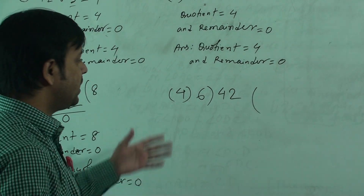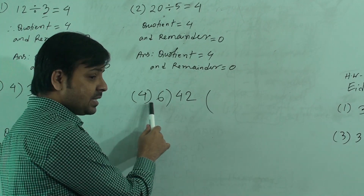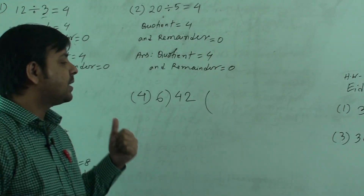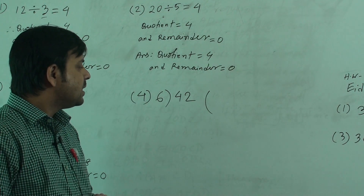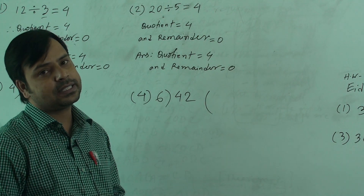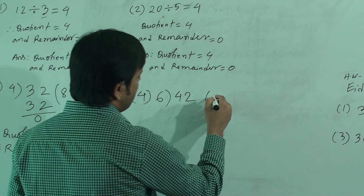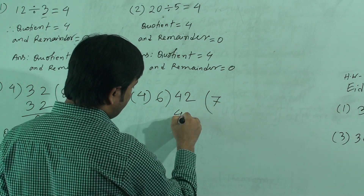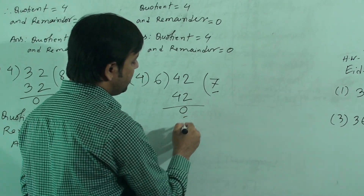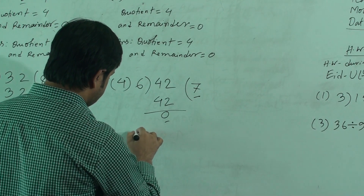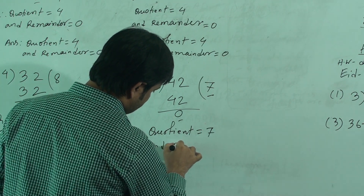Let us see our last question today. Last question is question 4. We need to divide 42 by 6. So, 6 is the divisor. We have to say the times table of 6: 6 0s are 0, 6 1s are 6, 6 2s are 12, 6 3s are 18, 6 4s are 24, 6 5s are 30, 6 6s are 36, 6 7s are 42. So, the quotient will be 7. As 6 7s are 42, we write 42, subtract to get 0. So, quotient equal to 7 and remainder equal to 0.